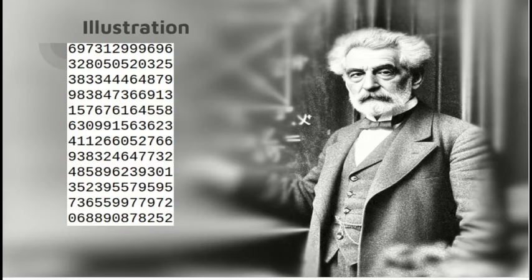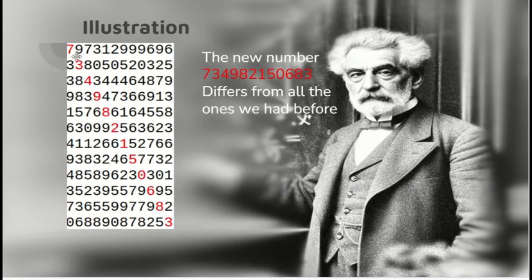So here's an illustration. A table of numbers. How do we apply the Cantor procedure? Well, look at the first three numbers on the diagonal. 6, 2, 3. We change them to 7, 3, 4. And do the same all the way down. And you end up with a new number. 7, 3, 4, 9, 2, 1, 5, 0, 6, 8, 3, which differs from all the numbers you had before.